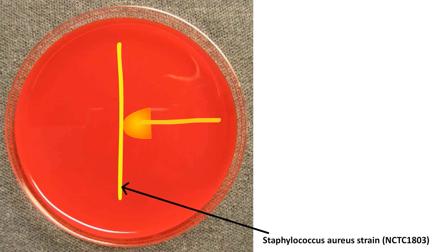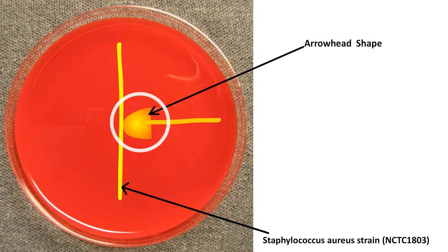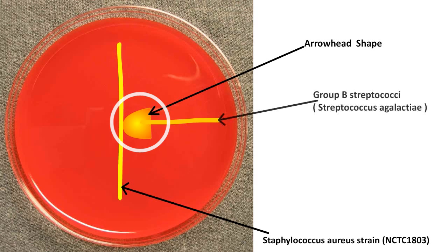Under aerobic conditions, group B Streptococci, but not other Streptococci, produce a substance known as CAMP factor that enhances the beta-lysin produced by the Staphylococcus. An area of increased lysis appears at the junction of the two organisms, and this area frequently appears in the shape of an arrowhead.